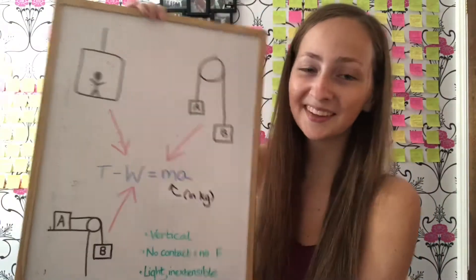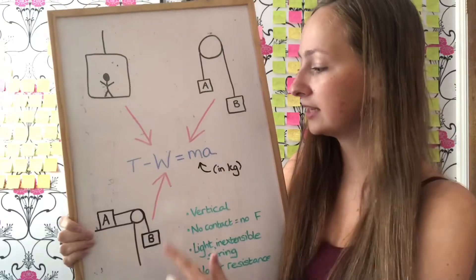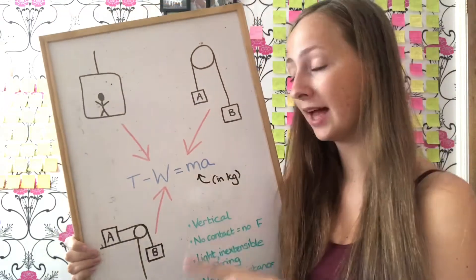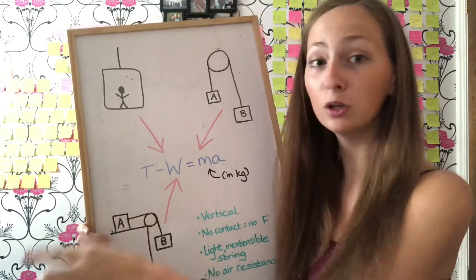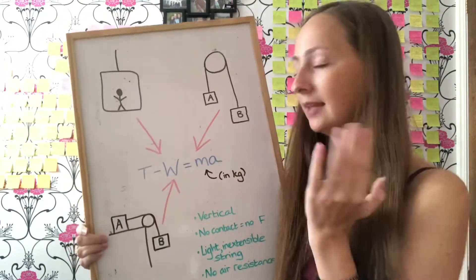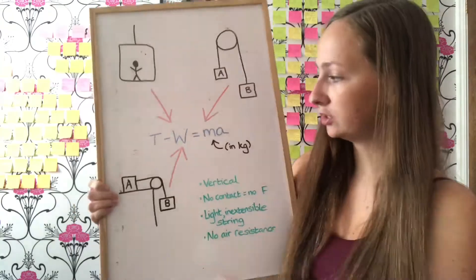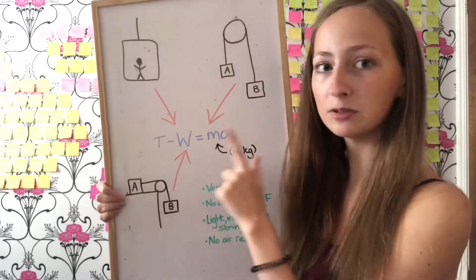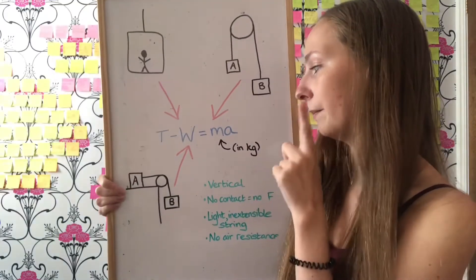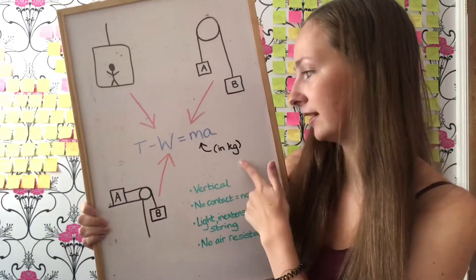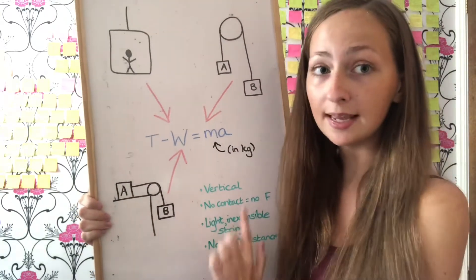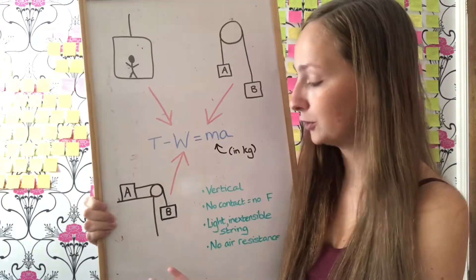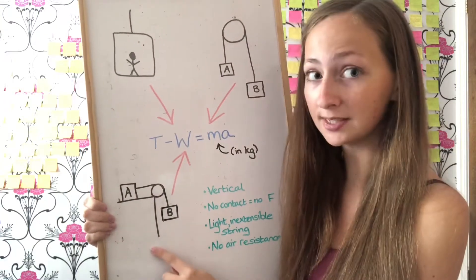Those sorts of questions all link back to one formula. This formula applies because everything being considered is vertical, therefore gravity is being considered, which is why we use weight. So it's T minus W equals ma — tension minus weight equals mass times acceleration. Mass is in kilograms and weight is mg. Everything we're looking at here is something suspended in the air.